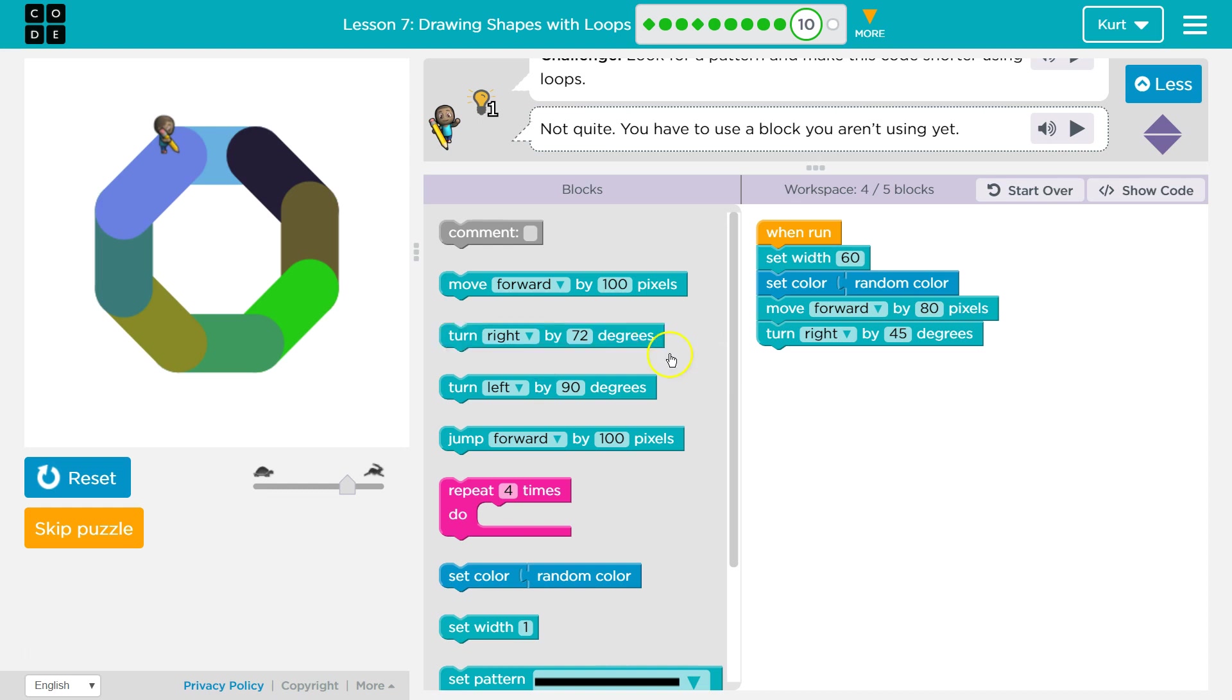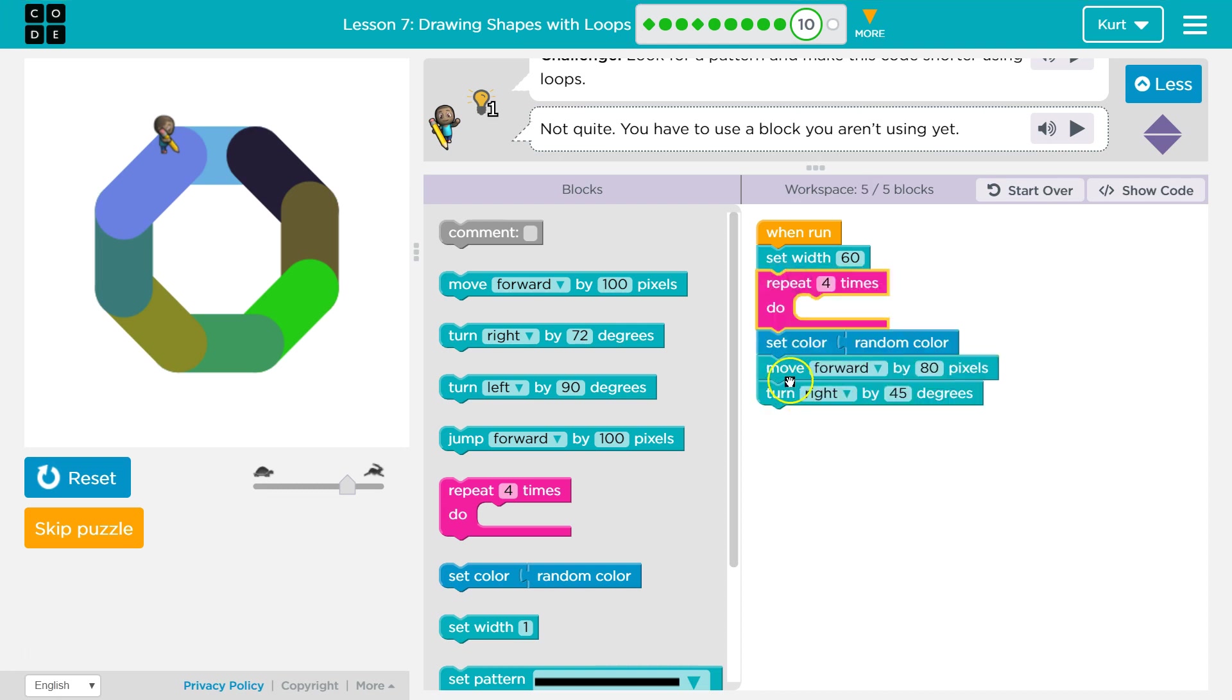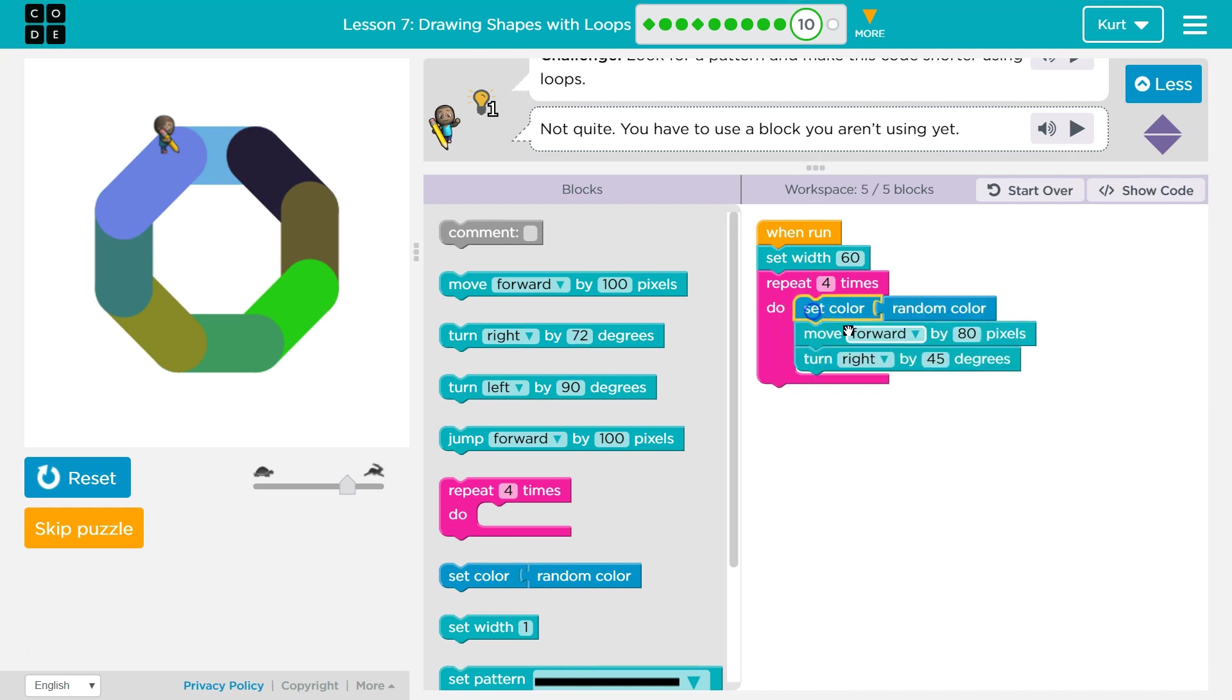I'm going to get rid of all of it, because instead I can use this pink block, which is a loop, a repeat block. So instead of writing all that code four times, any code inside this block will run four times, right? Or five or how many do we need? One, two, three, four, five, six, seven, eight. So I'm going to drag all this and drop it in here.